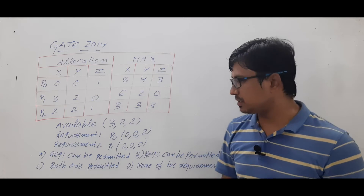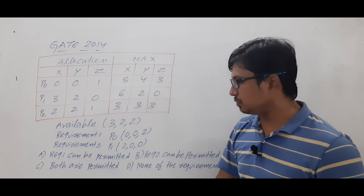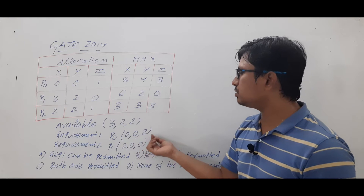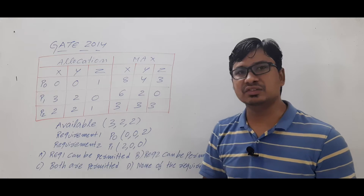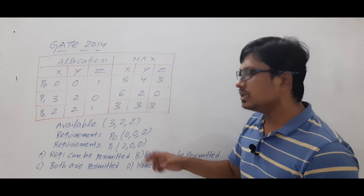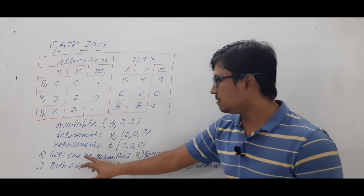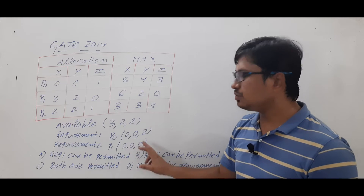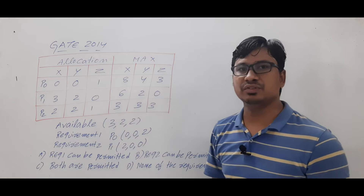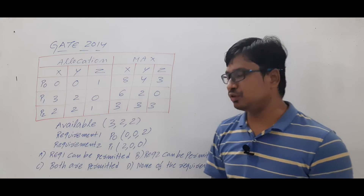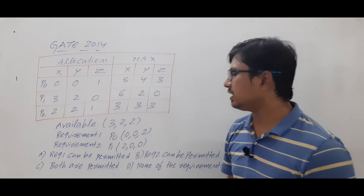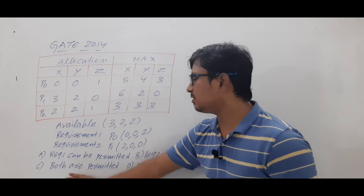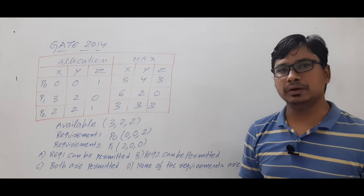Two more requirements are given. Requirement one says that process P0 needs zero, zero, two — meaning zero instances of resource X, zero of Y, and two of resource Z. Requirement two is related to process P1, which requests two, zero, zero — two instances of resource X, zero of resource Y and Z. The four options are: (A) only Requirement 1 can be permitted, (B) only Requirement 2 can be permitted, (C) both are permitted, and (D) none are permitted.